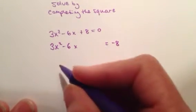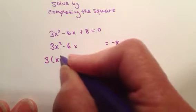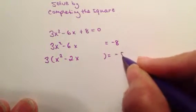Now over here, I'm going to take out the 3, the leading coefficient. I'm just going to factor out the leading coefficient. So I have 3x squared minus 2x equals negative 8.